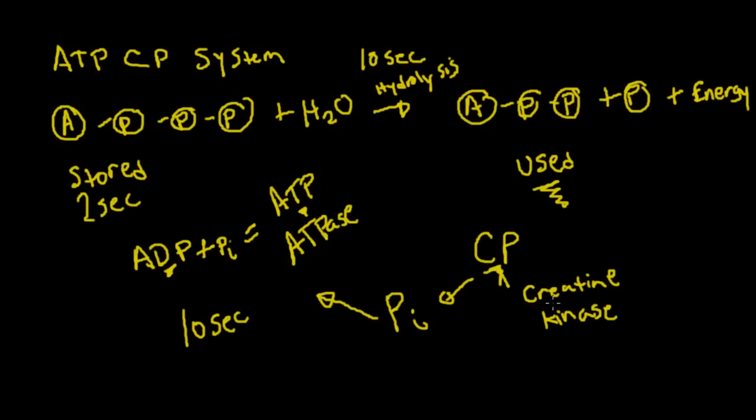So we'll take an enzyme called creatine kinase, and we're going to pop that phosphate off. And we're going to add it back to our ADP, but we need another enzyme to help us out, which is ATPase. And that's going to help us add this phosphate to the ADP, giving us ATP. And so that energy system would last for about 10 seconds.